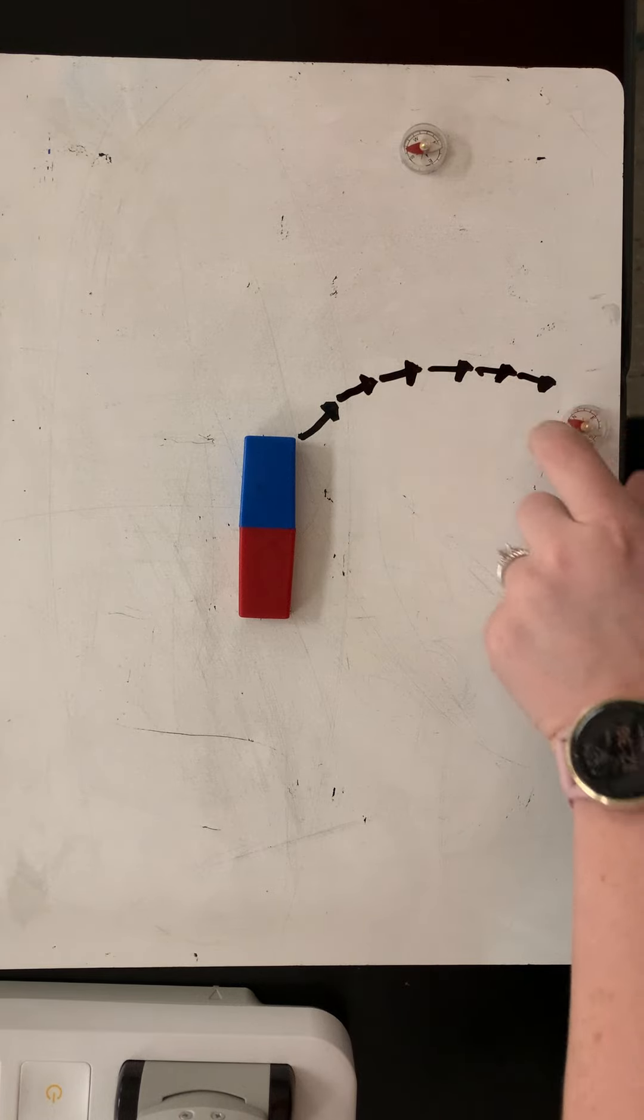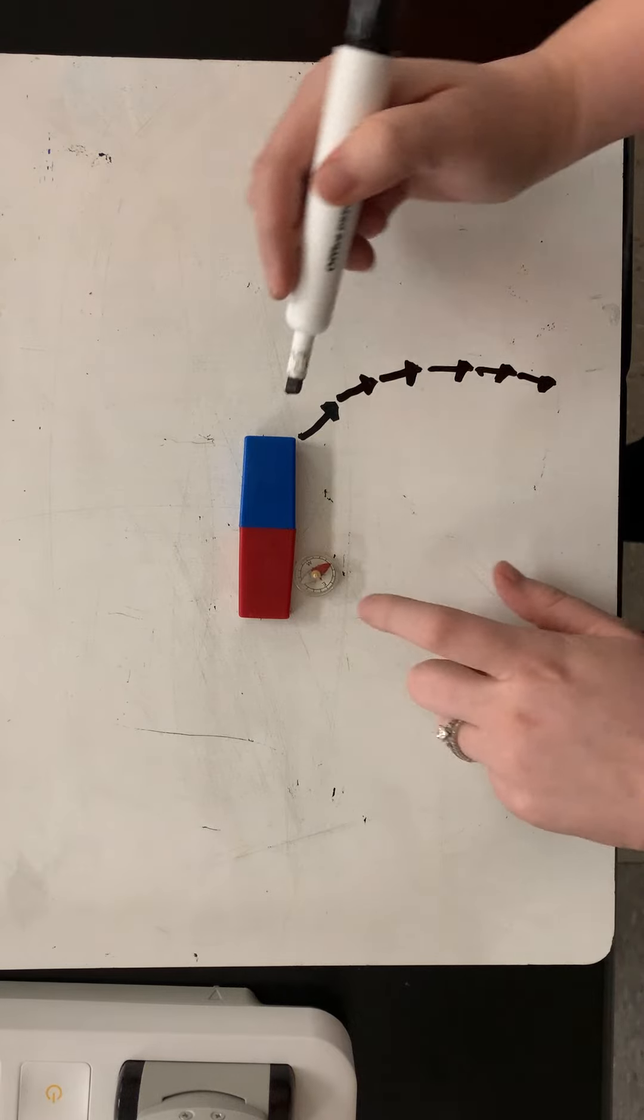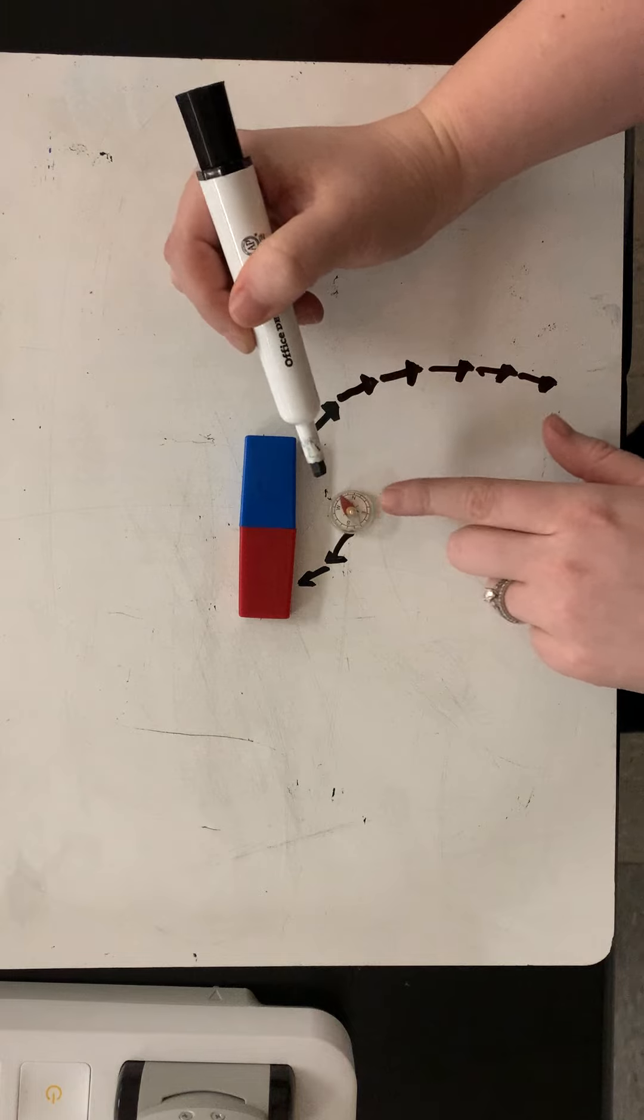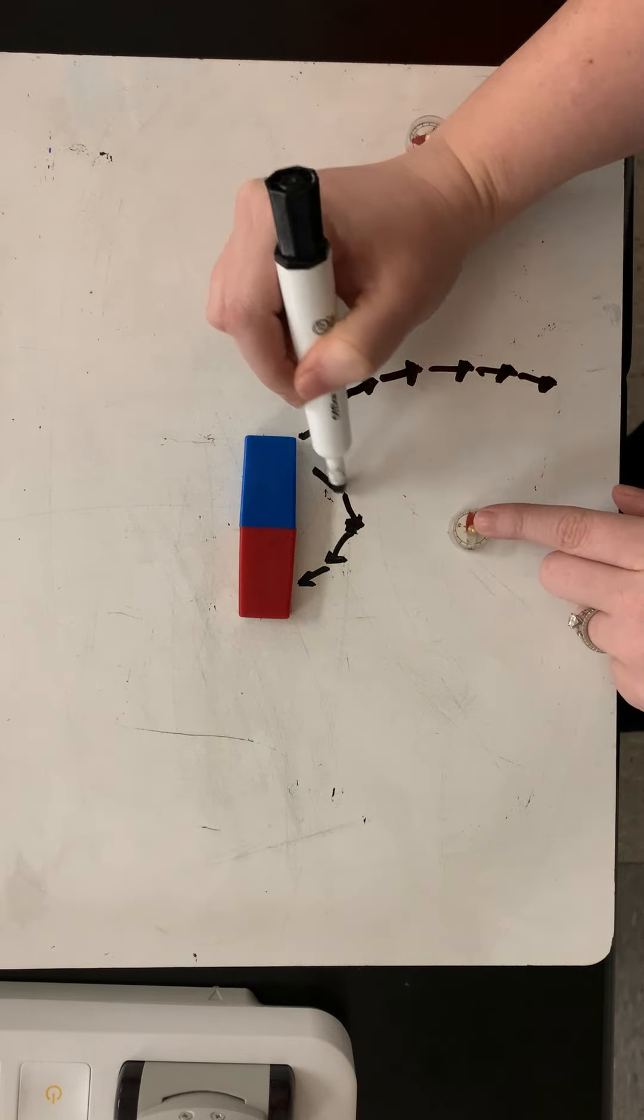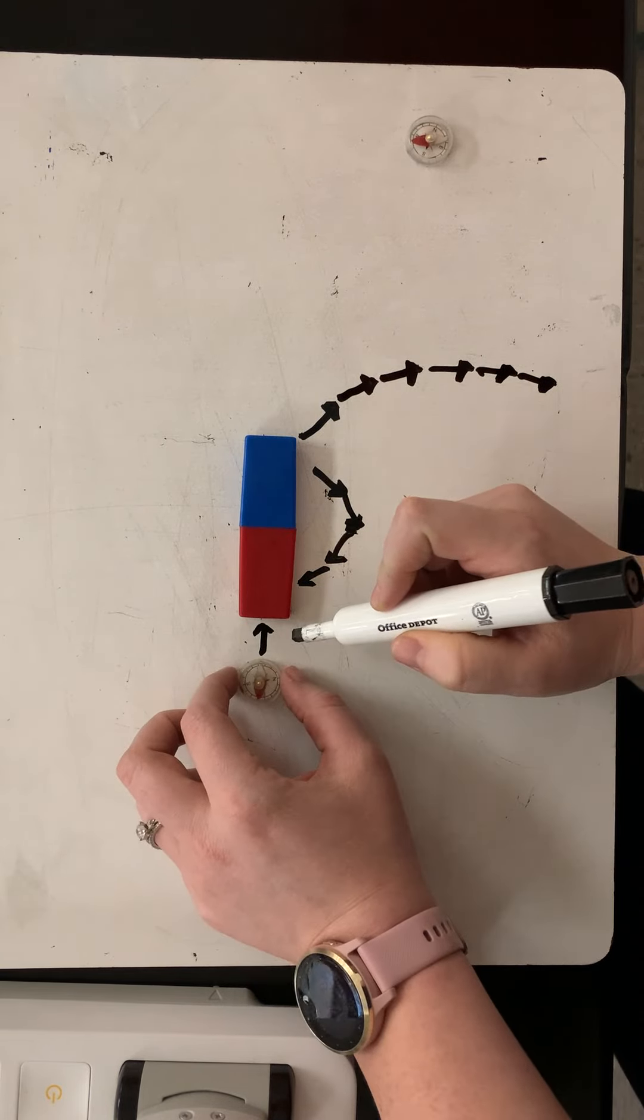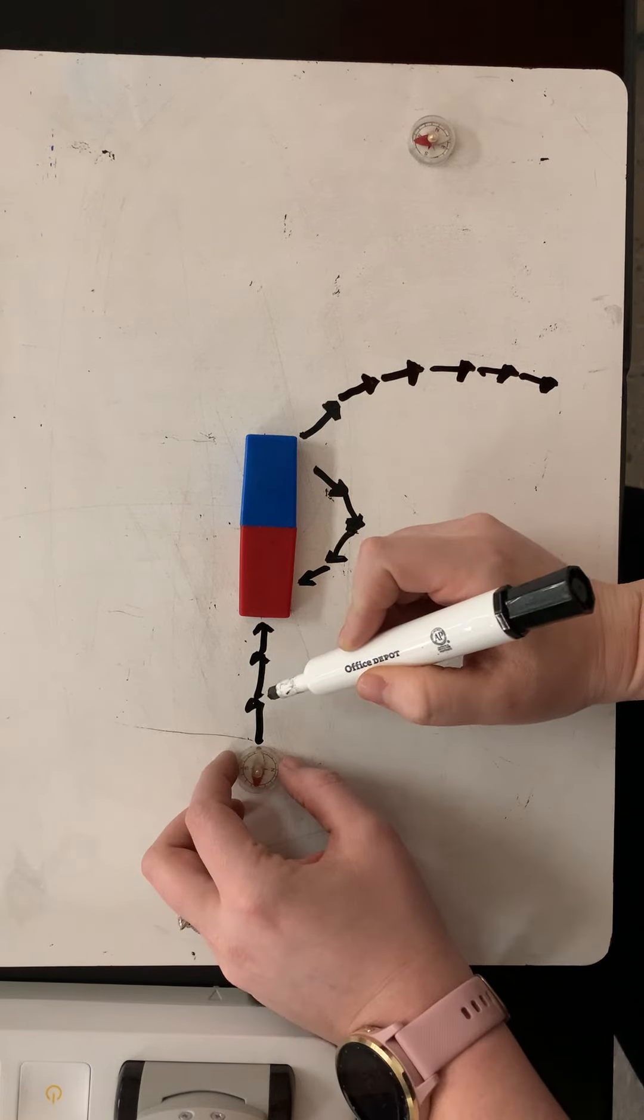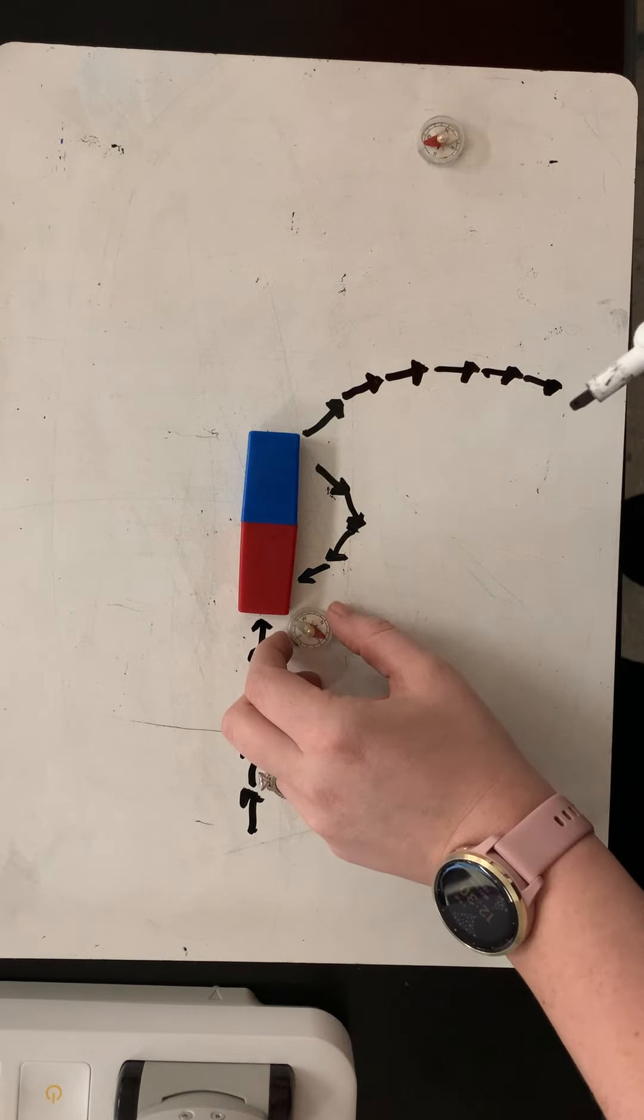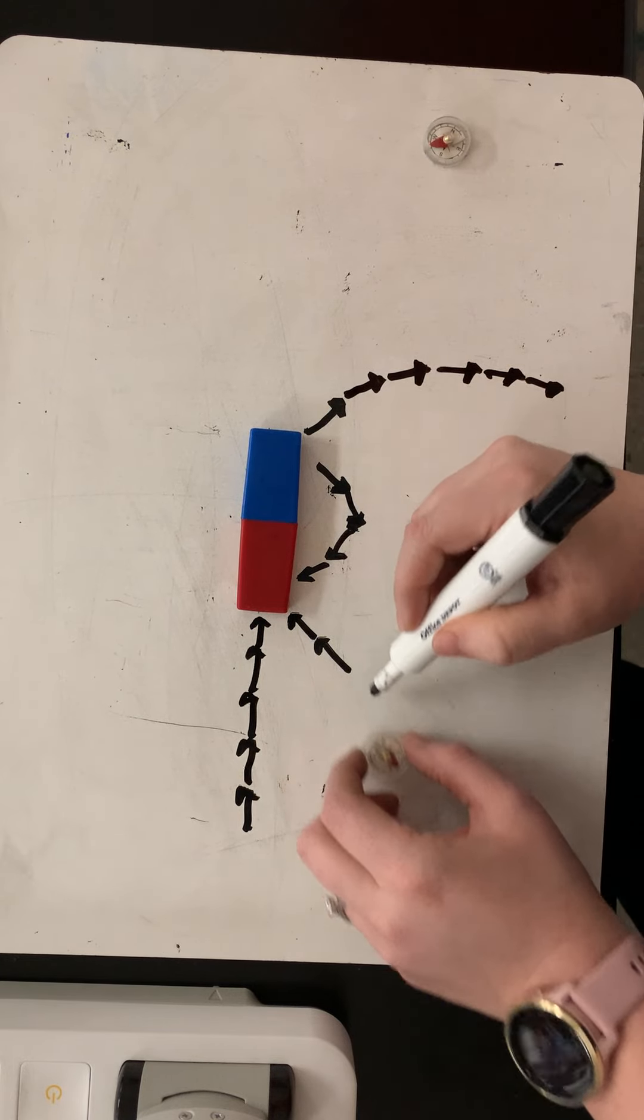And I can continue tracing where the compass points as it goes away from the magnet. And you might notice that further and further away it has less of a reaction, it takes longer to figure out. And we want to do a couple of these so we can figure out what the compass does around the magnet. And so we're gonna make lines like this, and it takes longer the further away you are from the magnet.